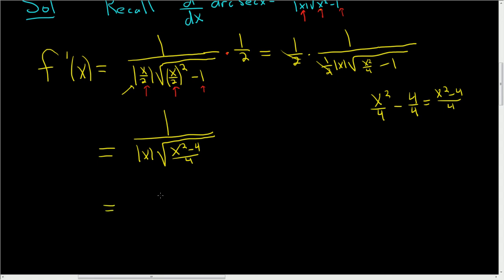All right, so this ends up being 1 over the absolute value of x, and then we get the square root of (x squared minus 4) all over 2.